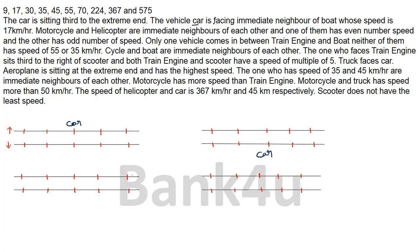Next clue: car is facing the immediate neighbor of boat, whose speed is 17 km/h. So if car is at one position, the vehicle directly opposite car must be the immediate neighbor of boat. This gives boat two possible positions in each case, resulting in four total possibilities. We know the speed of boat is 17 km/h.